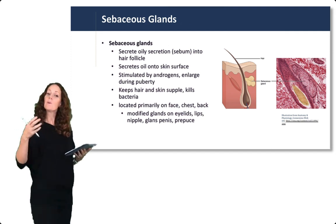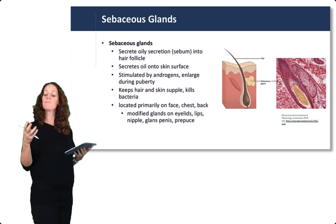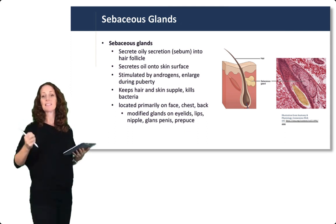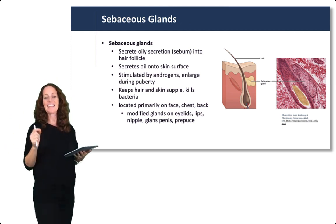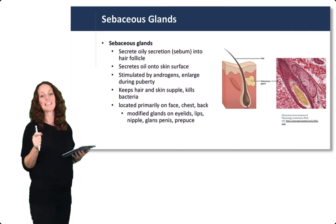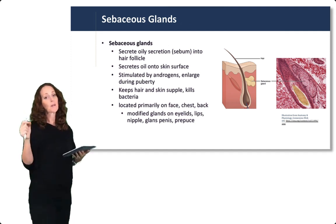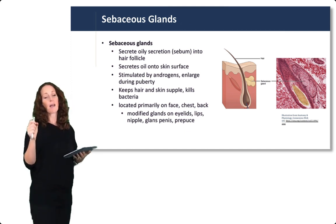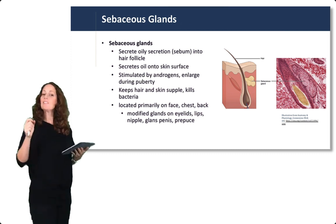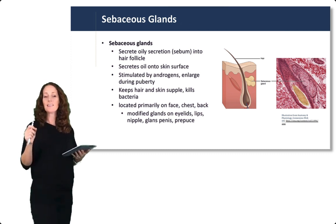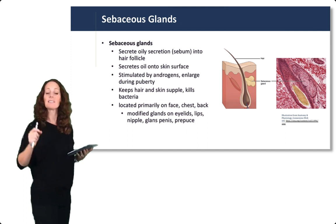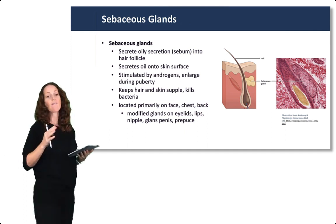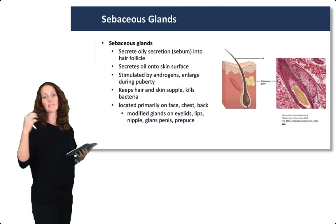Sebum helps to keep the hair and skin supple and also has a role in protection against bacteria. Although infection of the sebaceous glands can cause conditions like acne, which may need to be treated with antibiotics to keep bacteria in check. These sebaceous glands are located primarily on the face, chest, and back. So when learning about conditions affecting the sebaceous glands, look for distribution of lesions on the face, chest, and back.